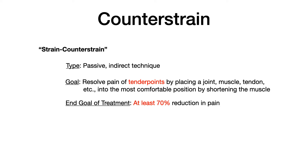Counterstrain, which is actually known as strain counterstrain in the literature, is a passive indirect technique. Passive means the physician moves the patient — remember the P's, P for physician. Indirect technique means that you are targeting your treatment towards the patient's ease, or the direction that a certain body area prefers. The goal of counterstrain is to resolve the pain of things called tender points, by placing a joint, muscle, tendon, or basically any body area into the most comfortable position — also known as the ease — by shortening the muscle.